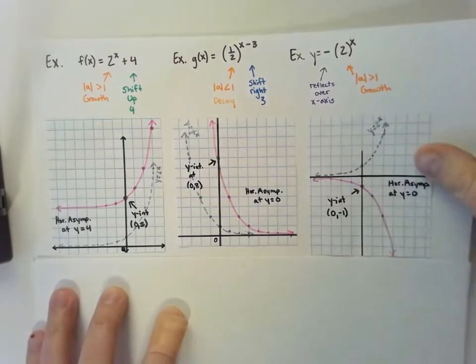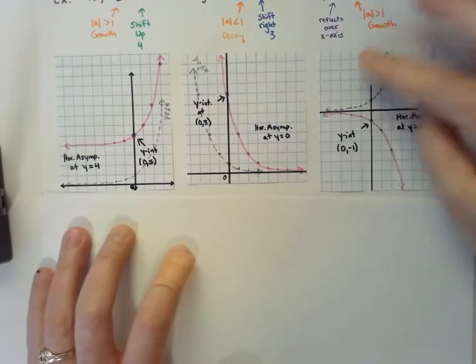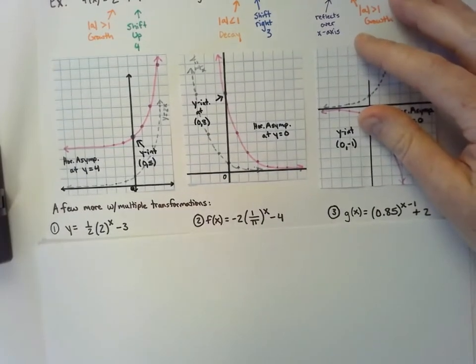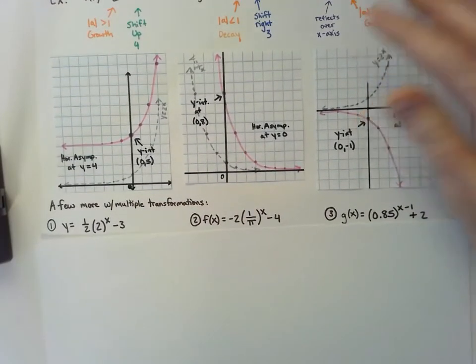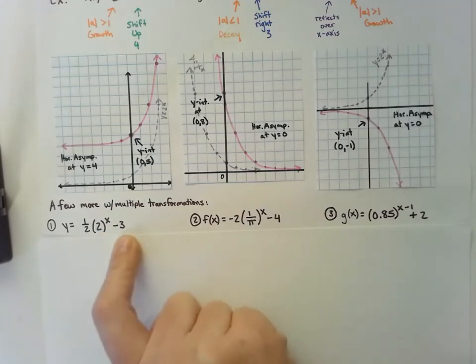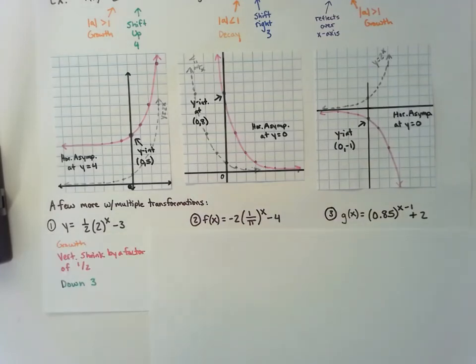I have a few more examples to show you. What if we have more than one transformation at a time in our function? For this first one, the one-half that's in the front would make this one have a vertical compression or shrink by a factor of one-half. The base value of 2 means this one is a growth function. And then this one also shifted down 3.